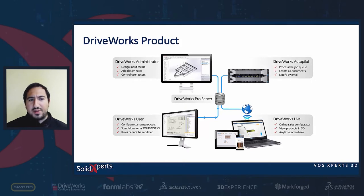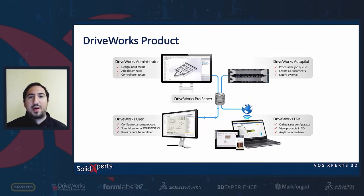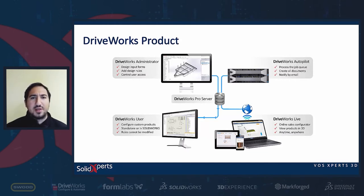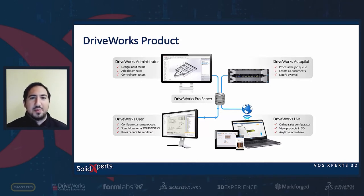Basically, you run the specification in DriveWorks Administrator, the User, or in DriveWorks Live. Any specification you run gets sent to the Autopilot, processed, and the Autopilot creates the 3D model, generates the drawing, generates all the files, and sends them by email automatically — so you don't have to do anything manually. DriveWorks Live is a program that takes all the form controls you built using DriveWorks Administrator and puts them online, so you can literally create a website using DriveWorks.